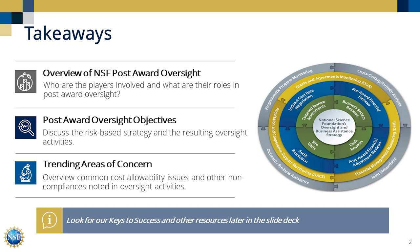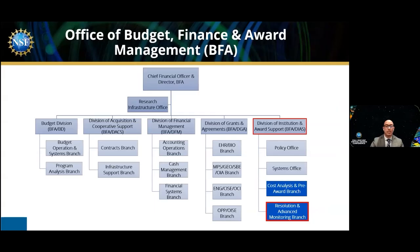The main takeaway for today is to provide you with an overview of the NSF post-award oversight: who are the players involved, and what are the roles in this whole process. I'm going to go over some details specific to our division, but also the different branch offices within our division. We're going to cover the post-award oversight objectives, which will mainly consist of the risk-based strategy that we employ at NSF and the resulting oversight activities that we conduct following that risk assessment. Following that, we'll go over some trending areas of concern based on our work in the field, and how we take that input and apply it. During this part of the presentation, we're also going to go over some of the cost-allowability issues that we find not only from our work during the advanced monitoring activities, but also through our work supporting the OIG audit resolution process.